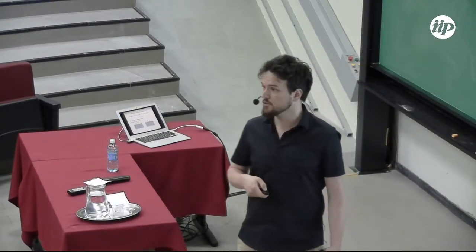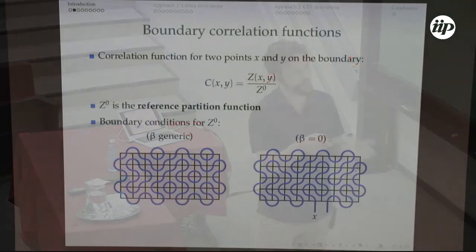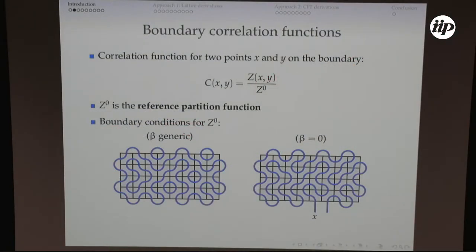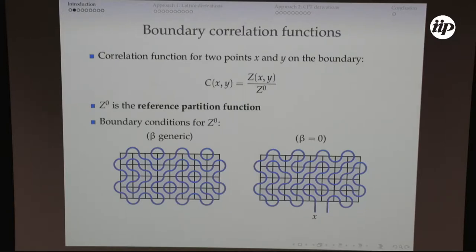The correlators I'm going to study are boundary correlators. I'm going to do something special on the lower segment depending on two positions x and y, compute this partition function, and then divide by Z0, a reference partition function. The natural choice whenever beta is generic is to set Dirichlet boundary conditions on all sides. For beta equals zero, this doesn't work because you always have at least one closed loop, so the partition function would be zero. Instead, I choose a reference partition function including two defects that are neighbors at position x, and this partition function does not depend on x.